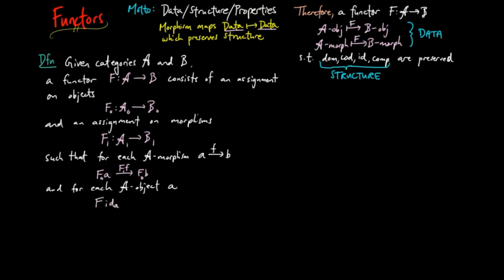F on the identity of A is equal to the identity on the object F(A). In other words, the functor F preserves identities.